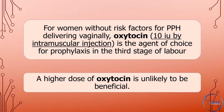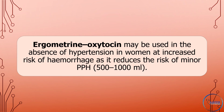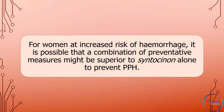A higher dose of oxytocin is unlikely to be beneficial. For women delivering by cesarean section, oxytocin 5 international units by slow intravenous injection should be used to encourage contraction of the uterus and to decrease blood loss. Ergometrine-oxytocin may be used in the absence of hypertension in women at increased risk of hemorrhage as it reduces the risk of minor postpartum hemorrhage, 500 to 1,000 milliliters. For women at increased risk of hemorrhage, a combination of preventative measures might be superior to syntocinonalone to prevent postpartum hemorrhage.